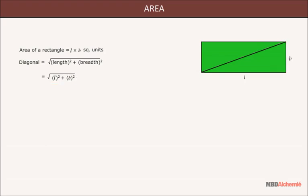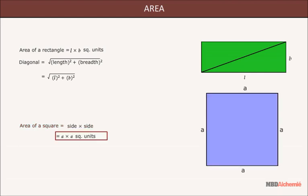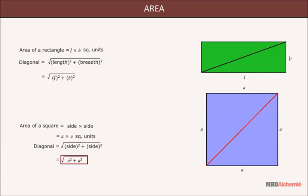Area. Let us learn about area of a square. Area of a square is equal to side × side or A × A square units. Its diagonal is equal to √(side² + side²) or √(A² + A²) or √(2A²).